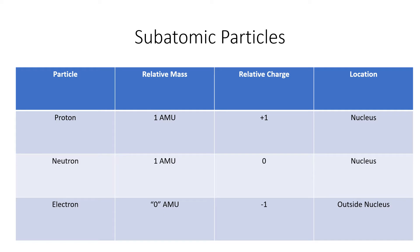I chose to do this in table form. We have three main particles that go into making up an atom: the protons, the neutrons, and the electrons. We're going to discuss these three different subatomic particles with respect to relative mass, relative charge, and then finally, the location — where would we find these?